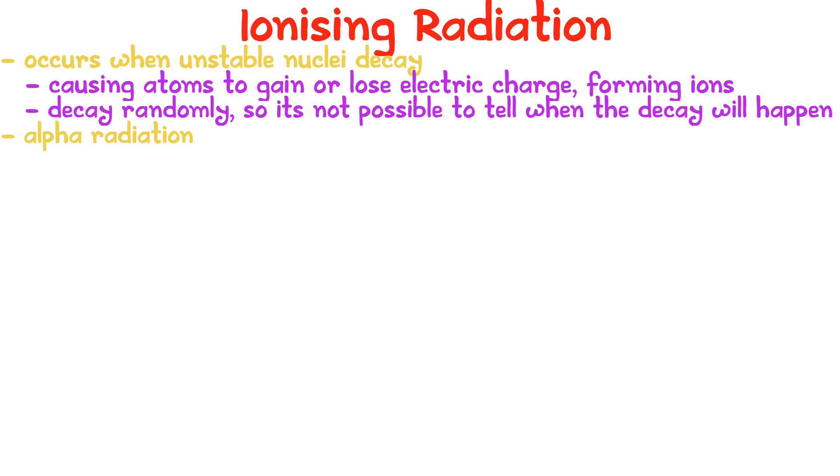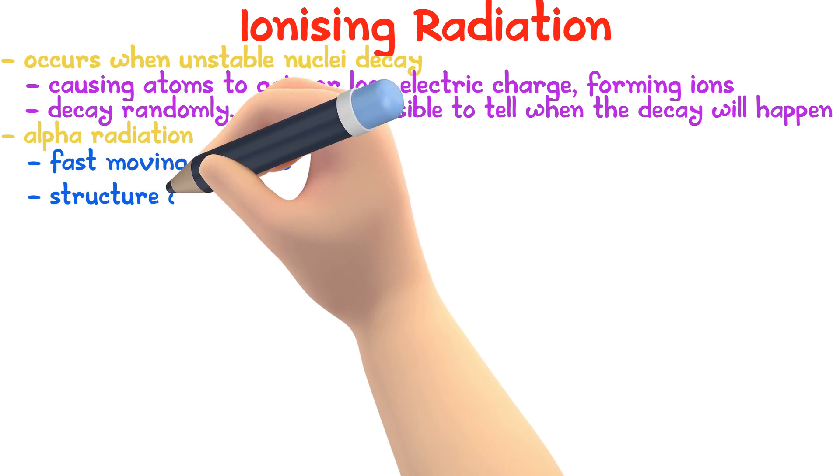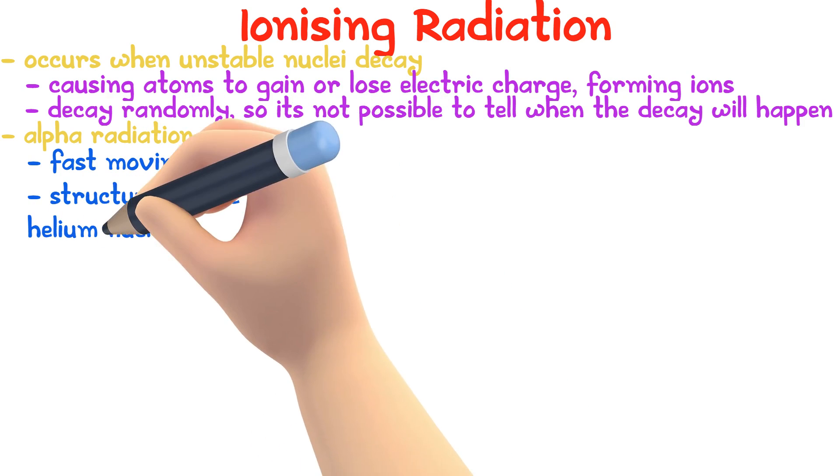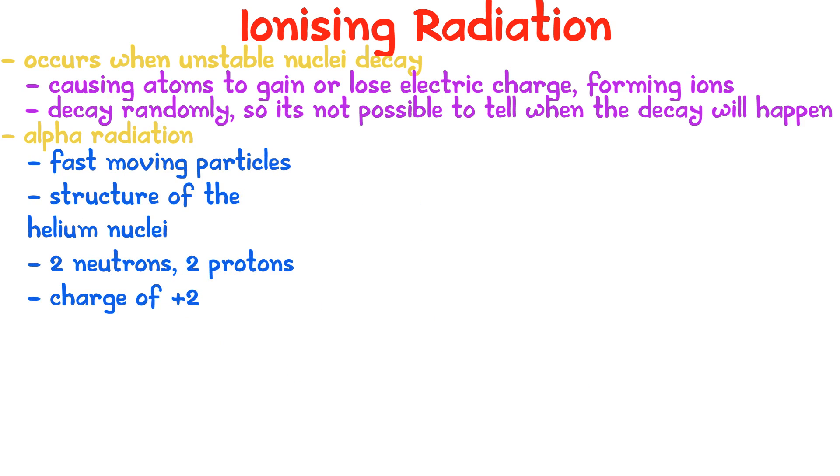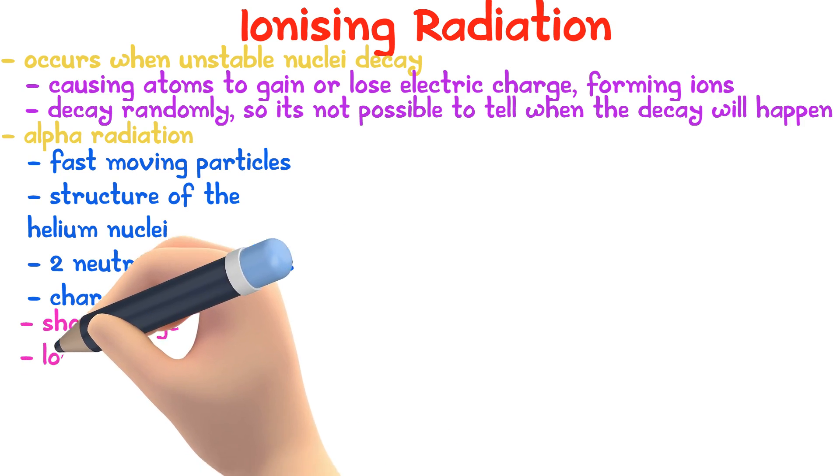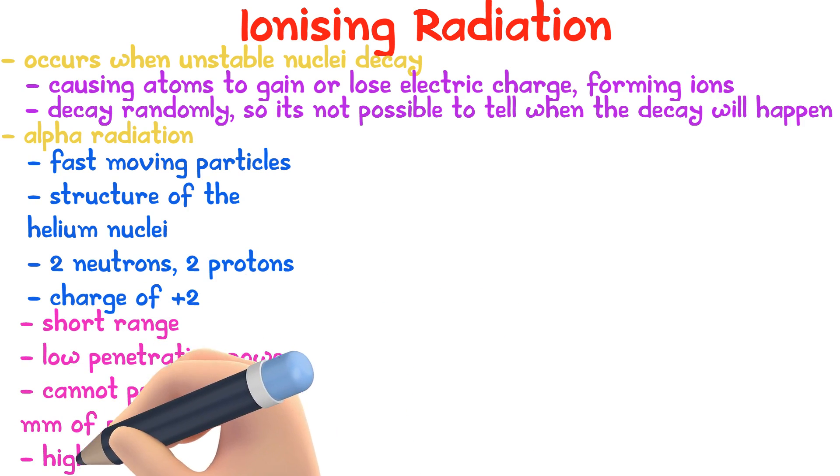Alpha radiation. Alpha are fast moving particles. They are the same as the helium nuclei with a mass number of 4 and would have a charge of plus 2 because of the two protons. Some features of alpha radiation: they have a short range, commonly travel a few meters in air, cannot penetrate few millimeters of paper, and are highly ionizing.